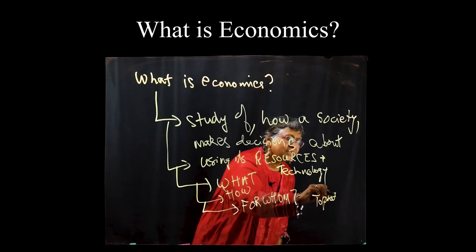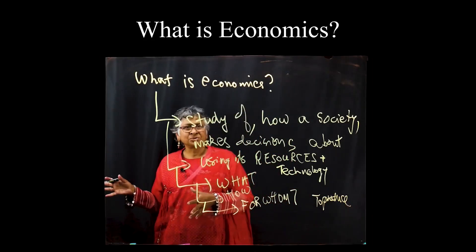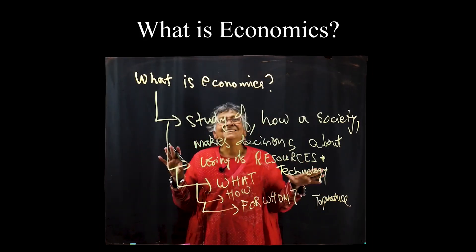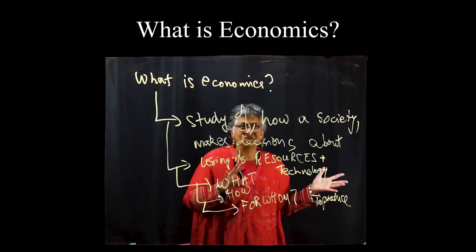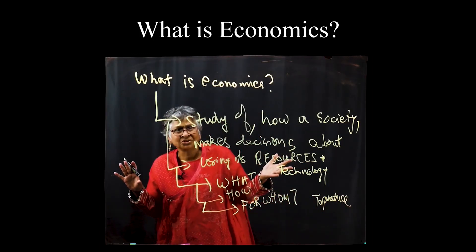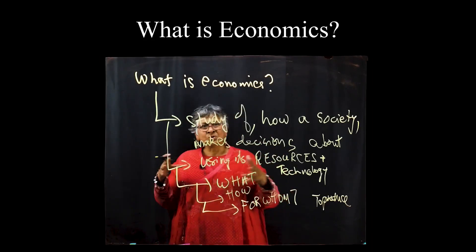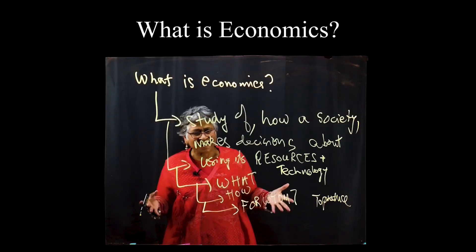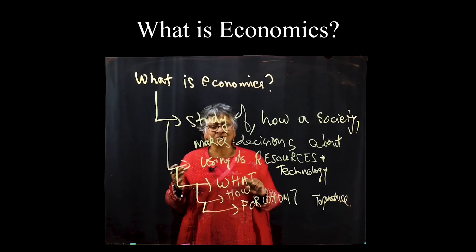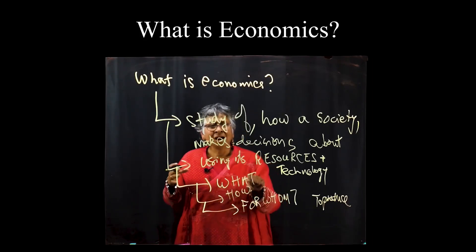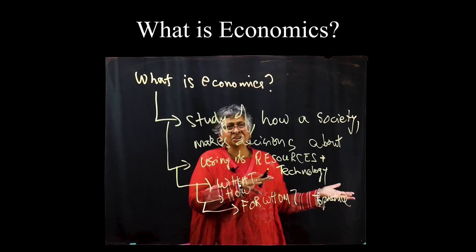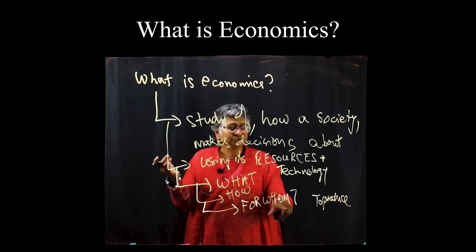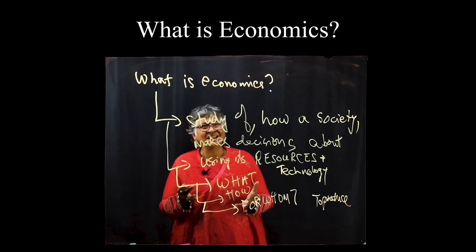What you're doing in a society is that you're taking your resources, you're making some decisions — you've got some decision-making process, whether it's a peasant society or an advanced capitalist society. And you're making decisions about: here's what I've got available, here are my resources, how am I going to use them? How am I going to decide what to produce? Should I produce guns or butter? How to produce? Should I produce ecologically sustainable or to promote highest growth and extraction? For whom to produce? Who is going to get the output?